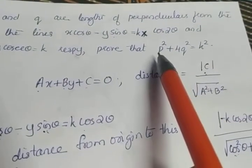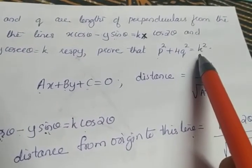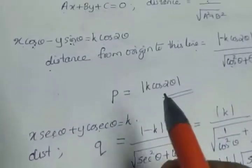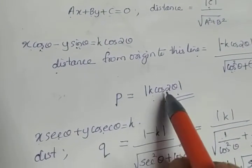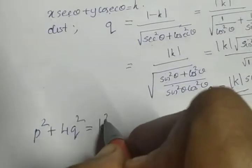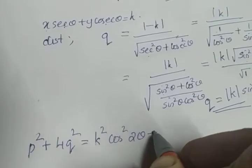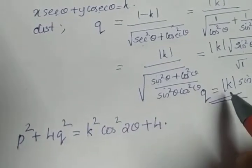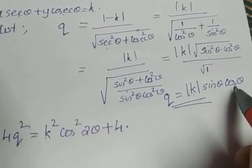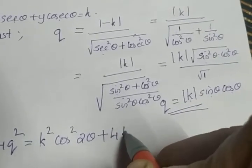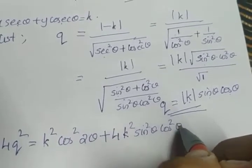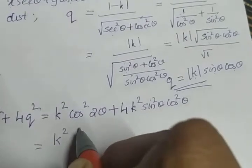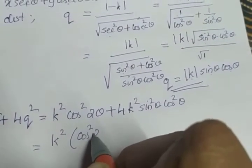Now we prove P² + 4Q² = K². Taking the LHS: P² = K² cos²2θ, since P = |K cos2θ|. So P² + 4Q² = K² cos²2θ + 4 · K² sin²θ cos²θ. Taking K² outside: K²(cos²2θ + 4sin²θ cos²θ).